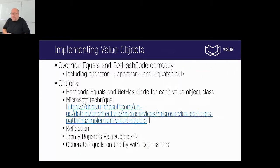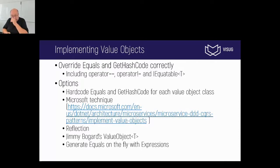I will have to override the equals method, along with get hash code and maybe the operators. My options are: option one, just hard-code everything; option two, use the technique prescribed by Microsoft; I could use reflection — there's an implementation of value object from Jimmy Bogard, also known from MediatR; and finally, that's kind of going to be my demo, look at how we can implement equals just once.